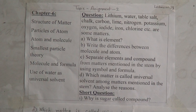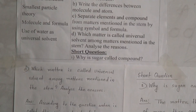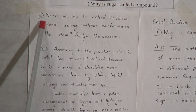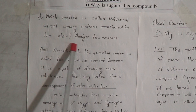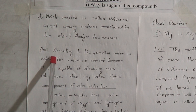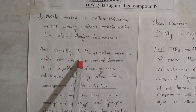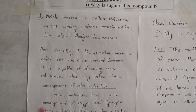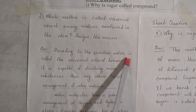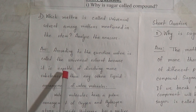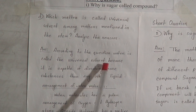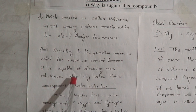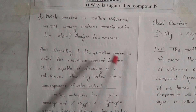I have written here the answer for question D. The question was: which matter is called universal solvent among the matters mentioned in the stem? Analyze the reason. Before answering, you have to know what is a solvent. A solvent is a liquid substance capable of dissolving one or more other substances. According to the question, water is called the universal solvent because it is capable of dissolving more substances than any other liquid.